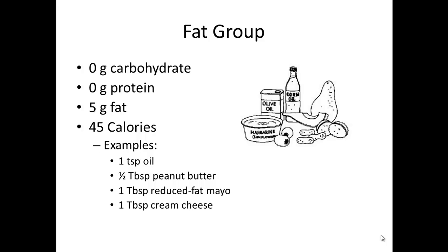Per serving, the fat group has no carbohydrate, no protein, 5 grams of fat, and 45 calories. Fat exchanges are often hidden along with other foods. When you look at the exchange system in the back of your textbook, you will note that several foods contain a couple of fat exchanges along with them. For example, french fries would be considered a starch, but they also include several fat exchanges as well.